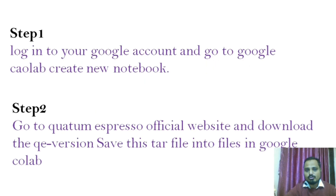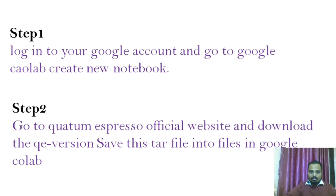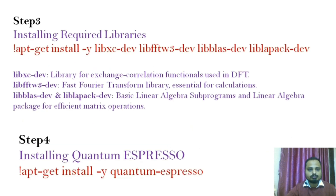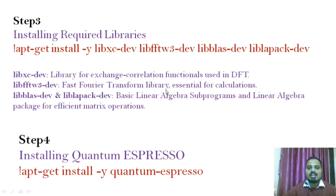Step one is to log in to your Google account, go to Google Colab, and create a new notebook. I have already prepared a video for that — please check the link in the comment box. Step two is to go to the Quantum ESPRESSO official site, download Quantum ESPRESSO, and save it in your Google Colab. We will first install all the dependent libraries: libxc, libfftw, and BLAS/LAPACK. The libxc library is used for the exchange-correlation functional used in DFT; libfftw is used for the Fast Fourier Transform, essential for the calculations; and the BLAS/LAPACK libraries are used for linear algebra and matrix operations.